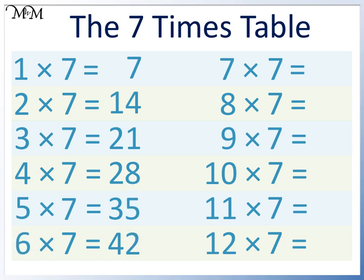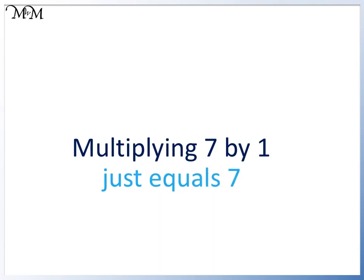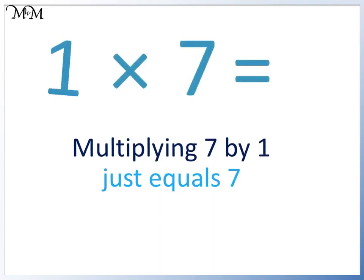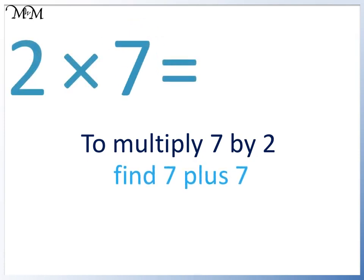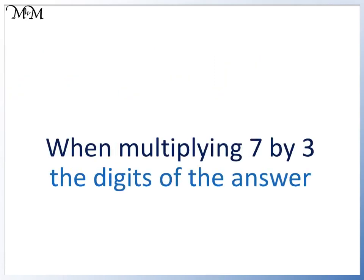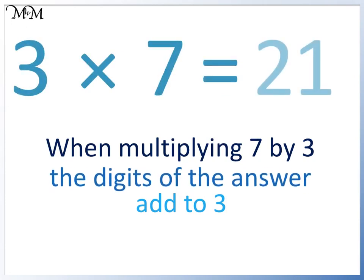We will now practice these first 6 times tables. Multiplying 7 by 1 just equals 7. To multiply 7 by 2, we find 7 plus 7. 7 plus 7 equals 14. When multiplying 7 by 3, the digits of the answer add to 3. The answer is 21, and the digits add to 3: 2 plus 1 equals 3.